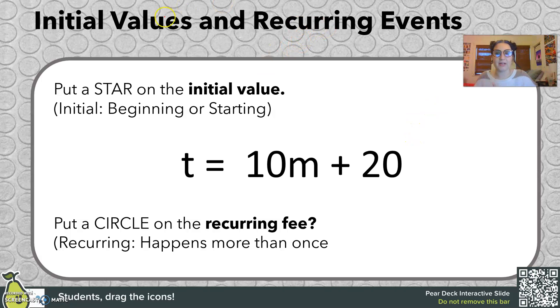So let's talk about initial values and recurring events. So I'll have you put a star on the initial value. So our initial value, which is the beginning or starting, was $20. So this is where we started at $20, our y-intercept.